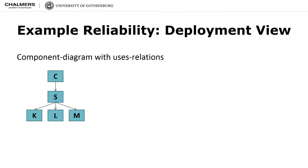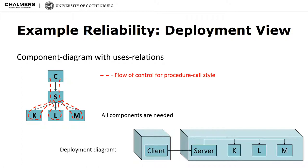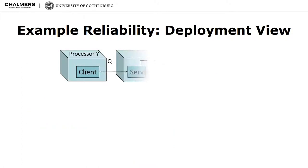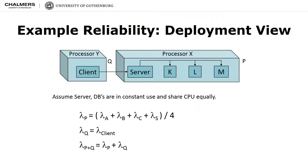In this example, we illustrate how to handle the timesharing of computational resources. Here, software components K, L and M, as well as S, are all deployed on one hardware processor. And component C is deployed by itself on a separate hardware node. When we assume that K, L, M and S each get an equal share of the time of processor X, then their failure rate gets divided by 4 because they get scaled down to one-fourth of their original time.